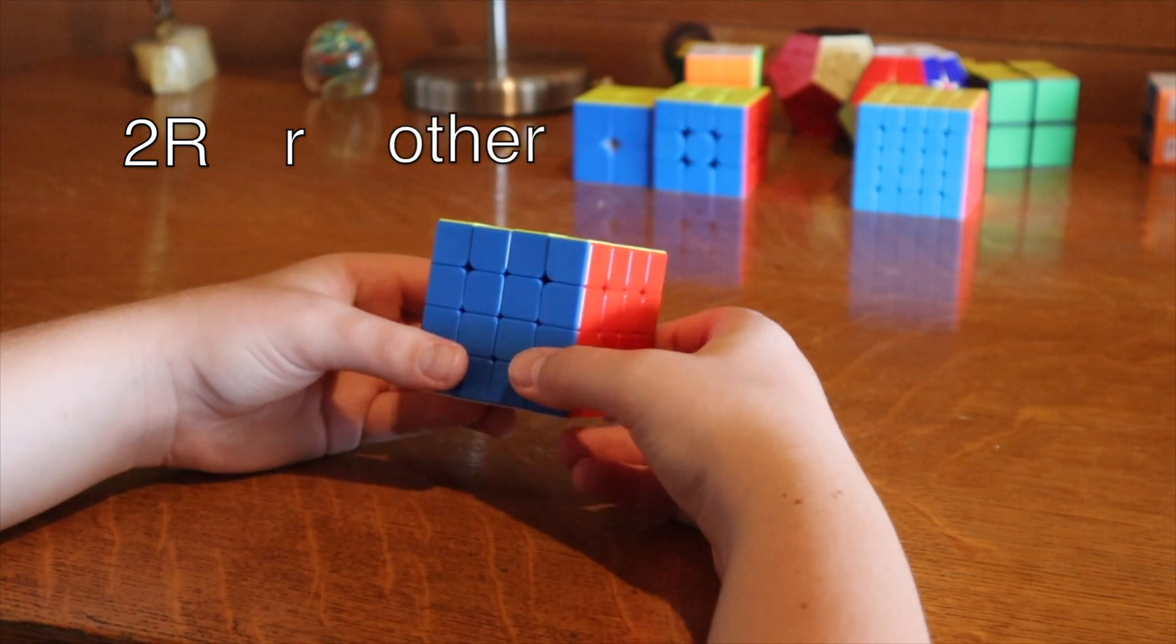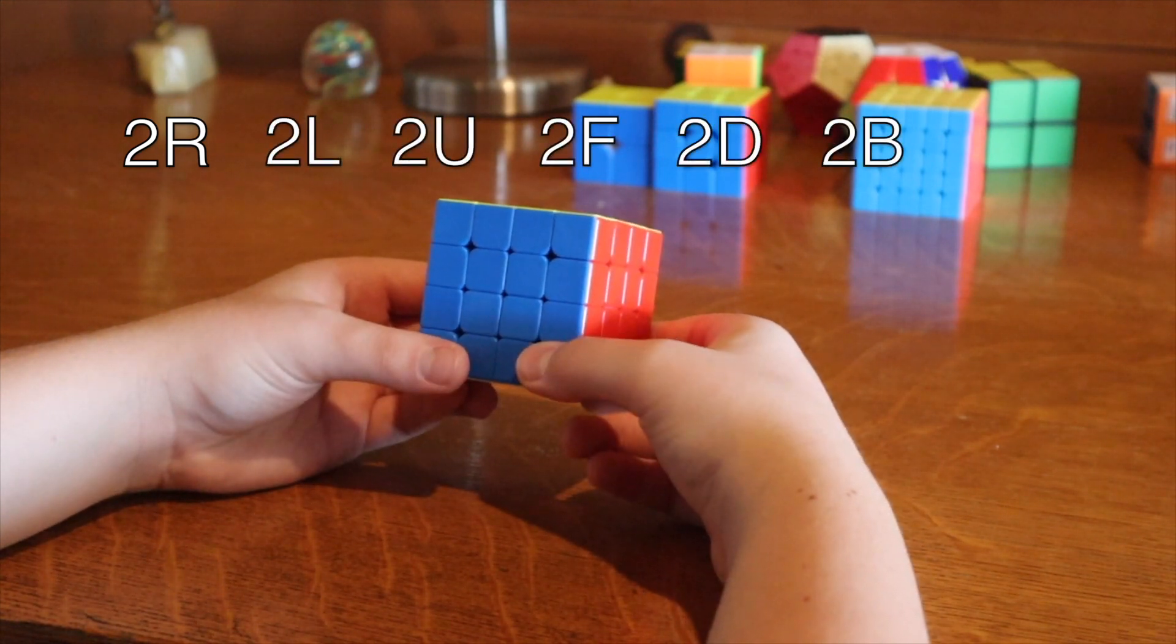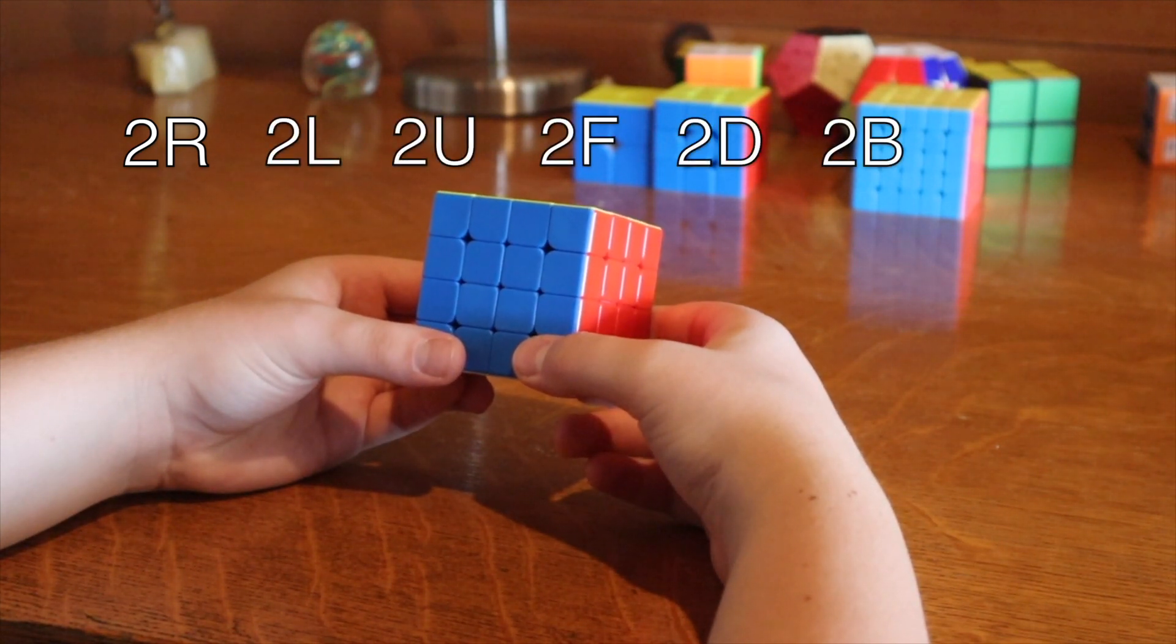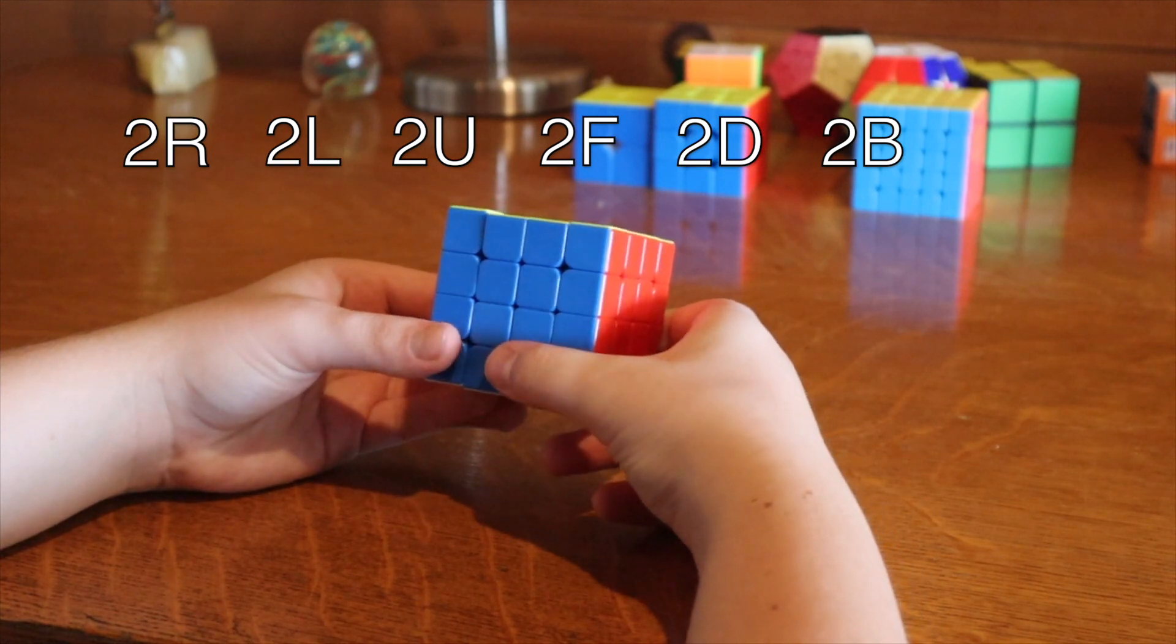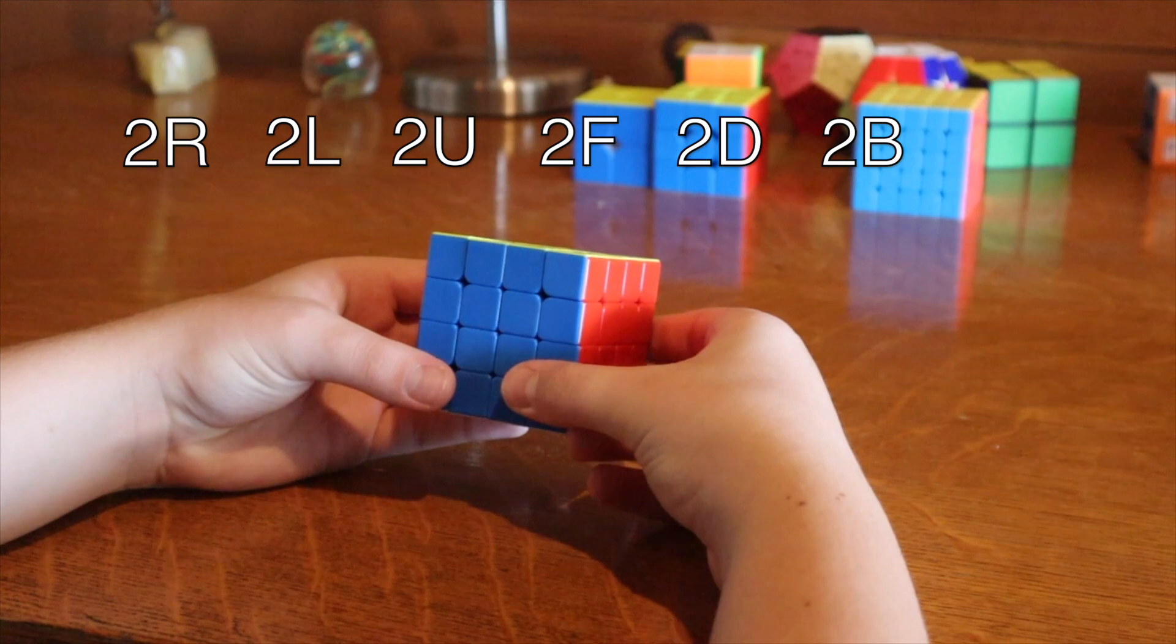I will just add a 2 before the letter. So now we have 2R, 2L, 2U, and so on.